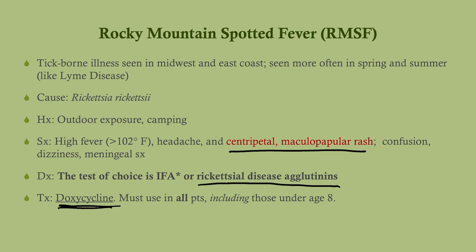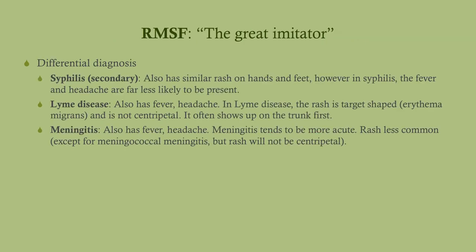Doxycycline is typically the right answer for tick-borne illnesses such as Q fever and Lyme disease. Importantly, you must use doxycycline in all patients with RMSF including those under age eight — in contrast to Lyme disease, where you can use amoxicillin for patients under eight. RMSF is also called the 'great imitator.' Meningitis patients with meningococcal disease can get a rash, but those patients look really sick and are often septic.